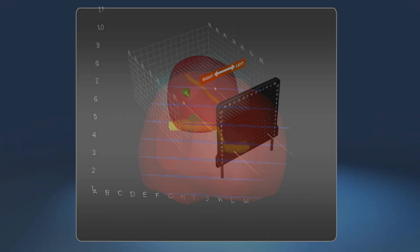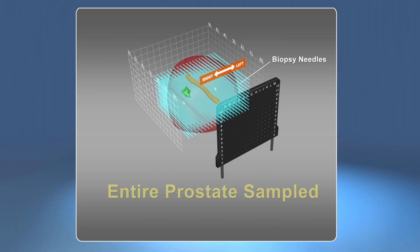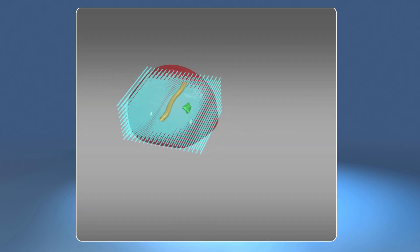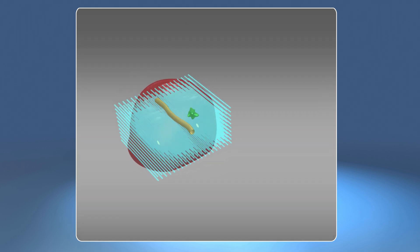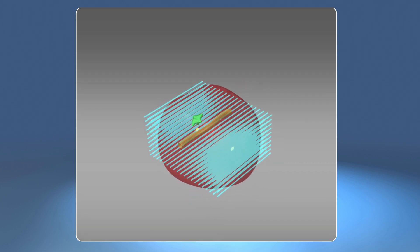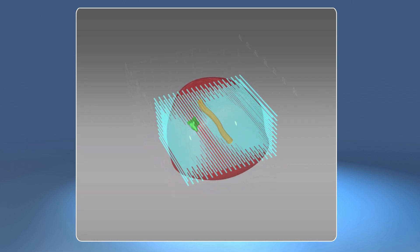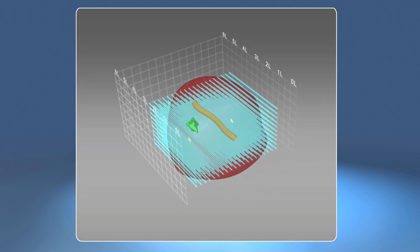Unlike the traditional transrectal biopsy, which collects 12 biopsy samples, we sample the entire prostate, collecting anywhere between 25 and 150 samples. This gives us the confidence to know that the patient is appropriately diagnosed and receives the treatment which matches their disease state.